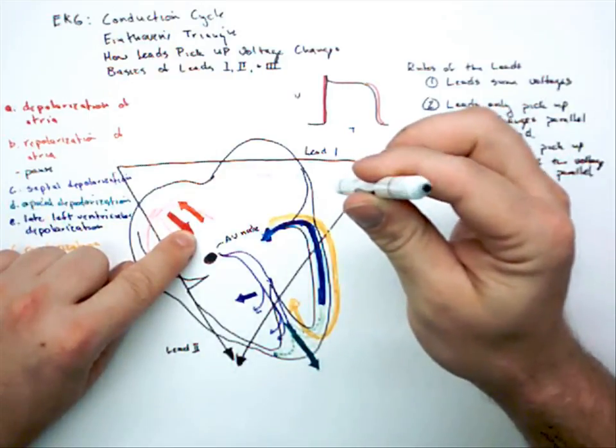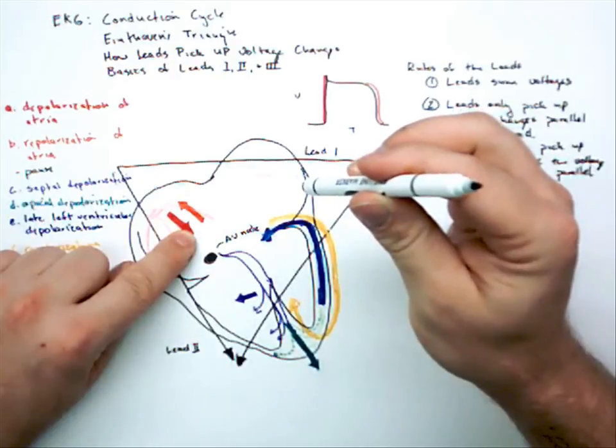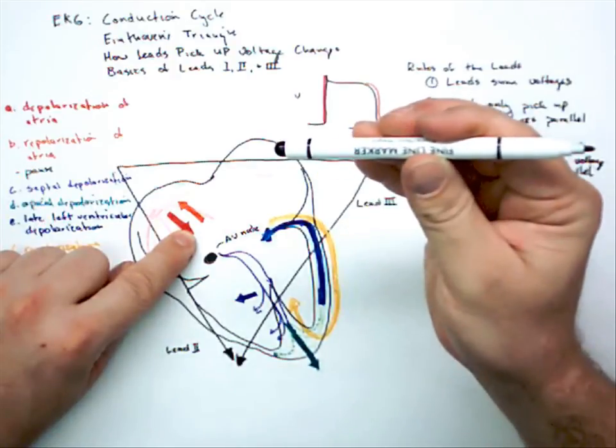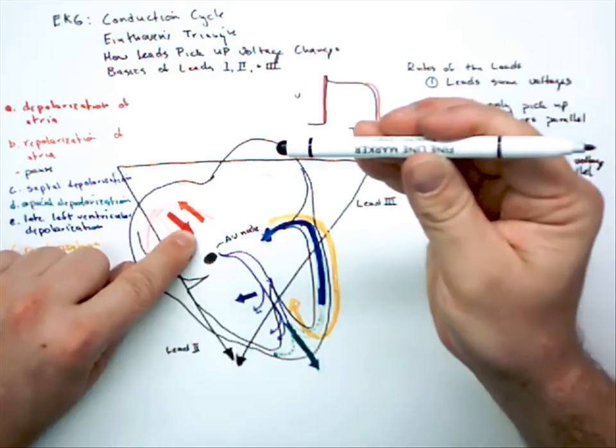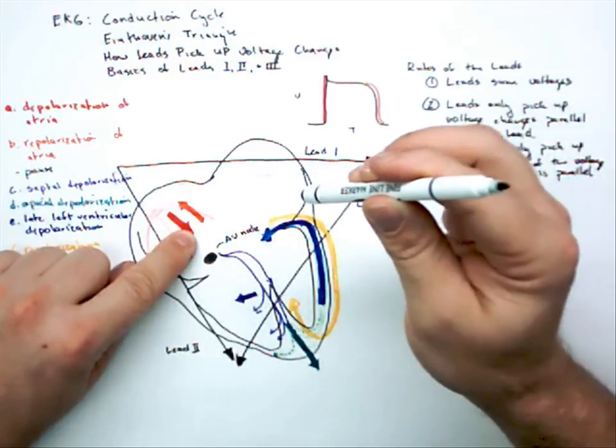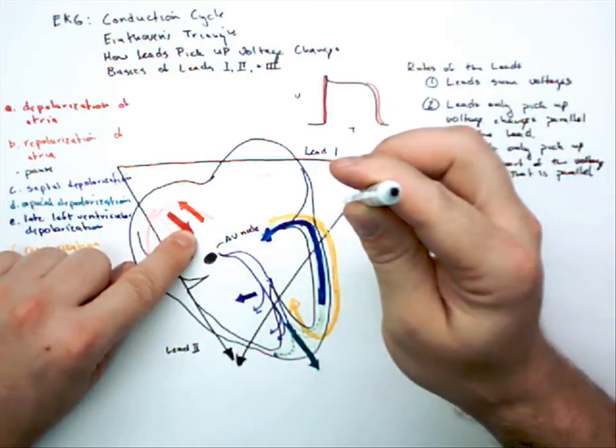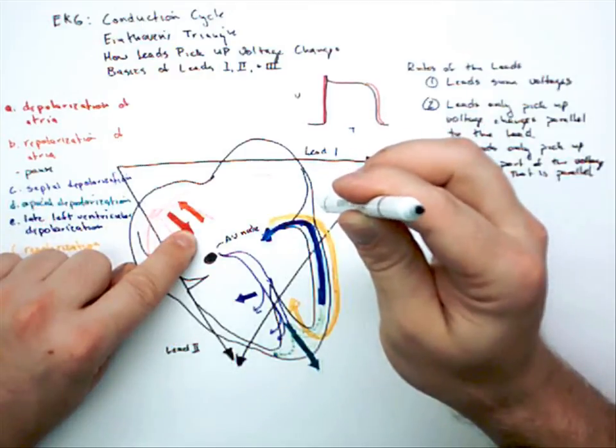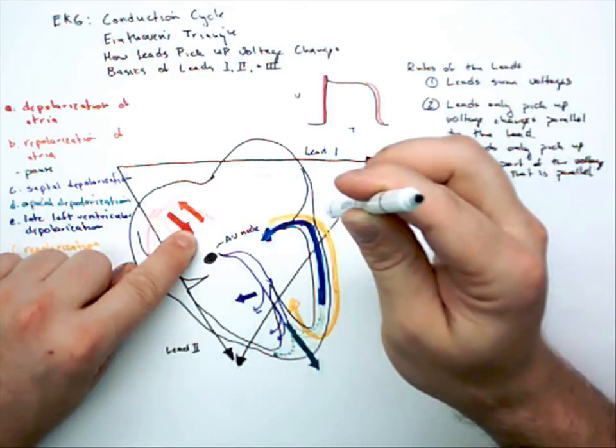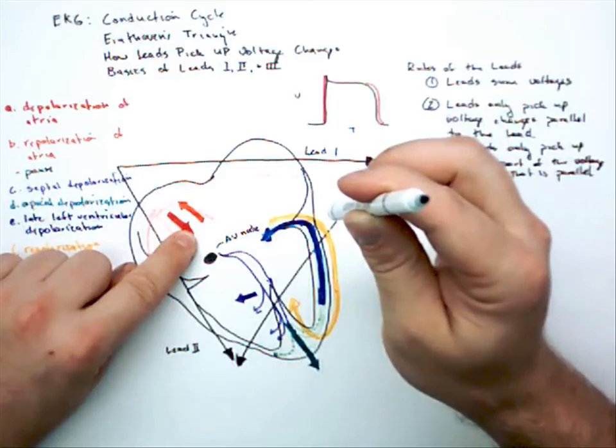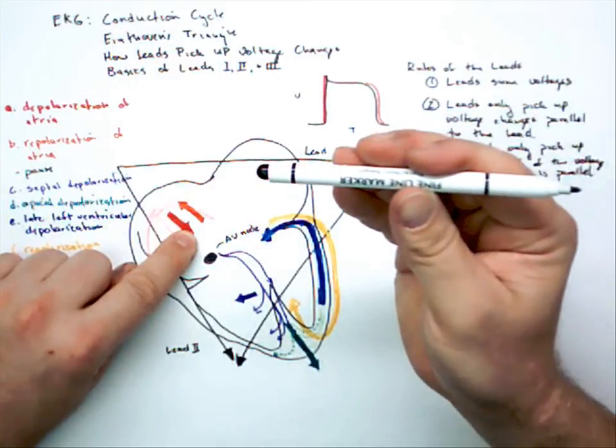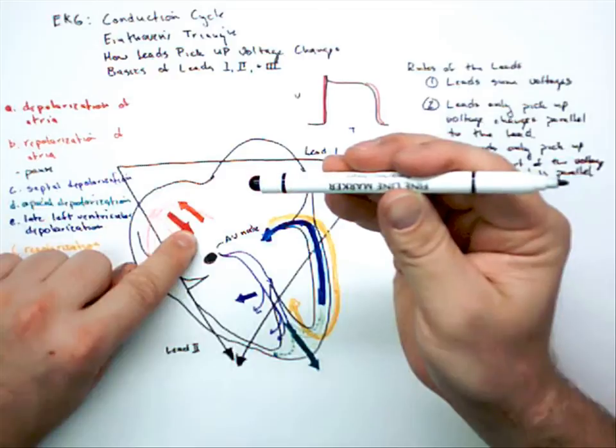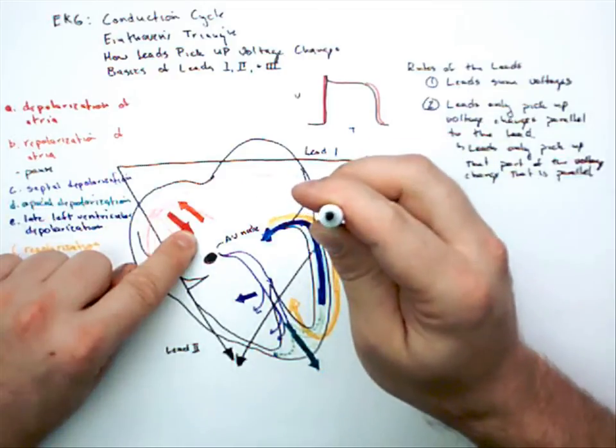If it's a little bit offset, then you're forced to say this pen is about two inches long. Or if I change it all the way, you say the pen is about four inches. So basically the lead will only pick up that part of the voltage change that runs parallel to it. So if you only can see a little bit parallel, then the EKG will sense a very small change in voltage. If it's running very parallel, it'll recognize a large voltage change. If it's completely perpendicular, it won't recognize the voltage change hardly at all.